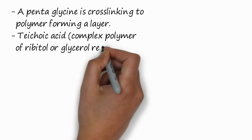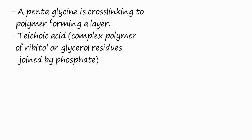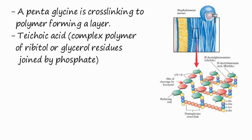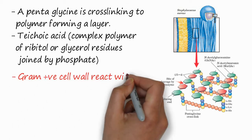Similarly, teichoic acid is a complex polymer of ribitol or glycerol residue joined by a phosphate. It is also present in gram positive cell wall. You can see the two layers which are attached to each other by the pentaglycine. From the third amino acid residue, it is attached to the fourth of the next layer, and this is where they are forming a layer.